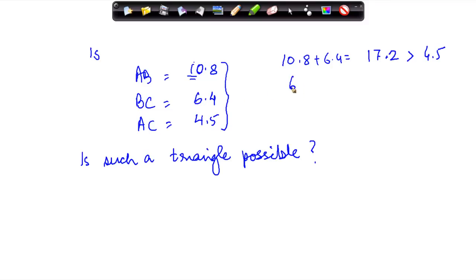Similarly, if I do the sum of 6.4 plus 4.5, I get 10.9 which is greater than 10.8. Also 10.8 plus 4.5 is equal to 15.3 which is greater than 6.4. Now because all these three sides when taken together in consonants with the other side, give us a sum which is more than the value of the third independent side, such a triangle is possible.